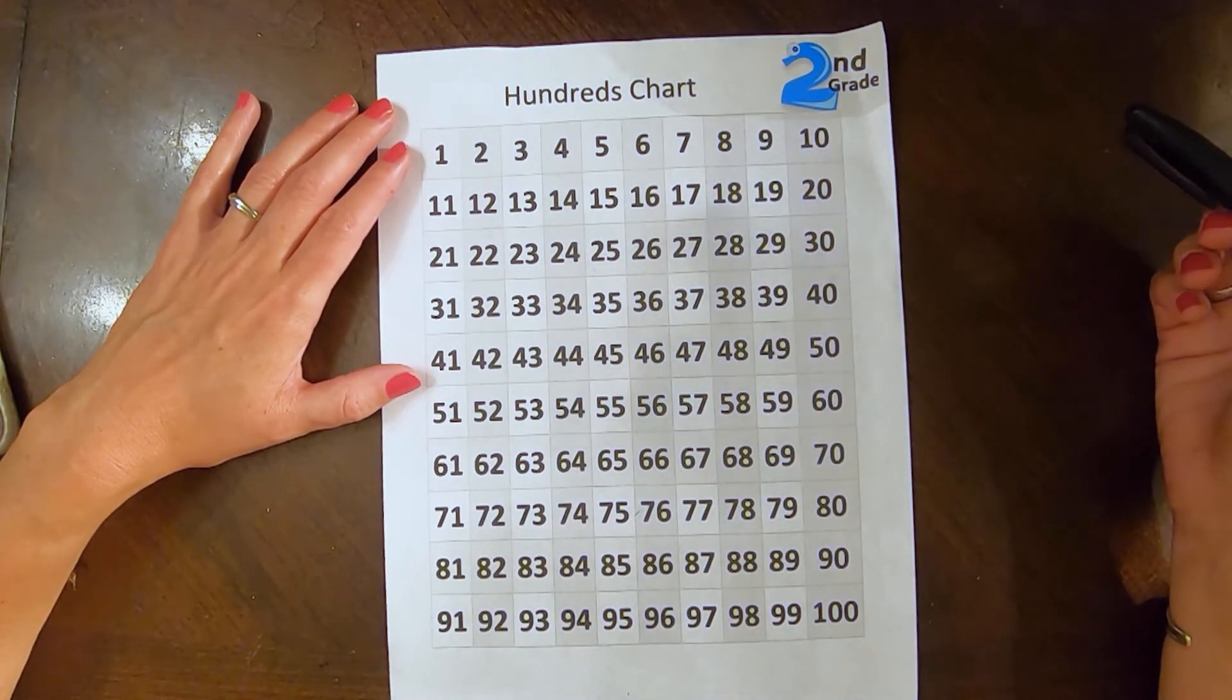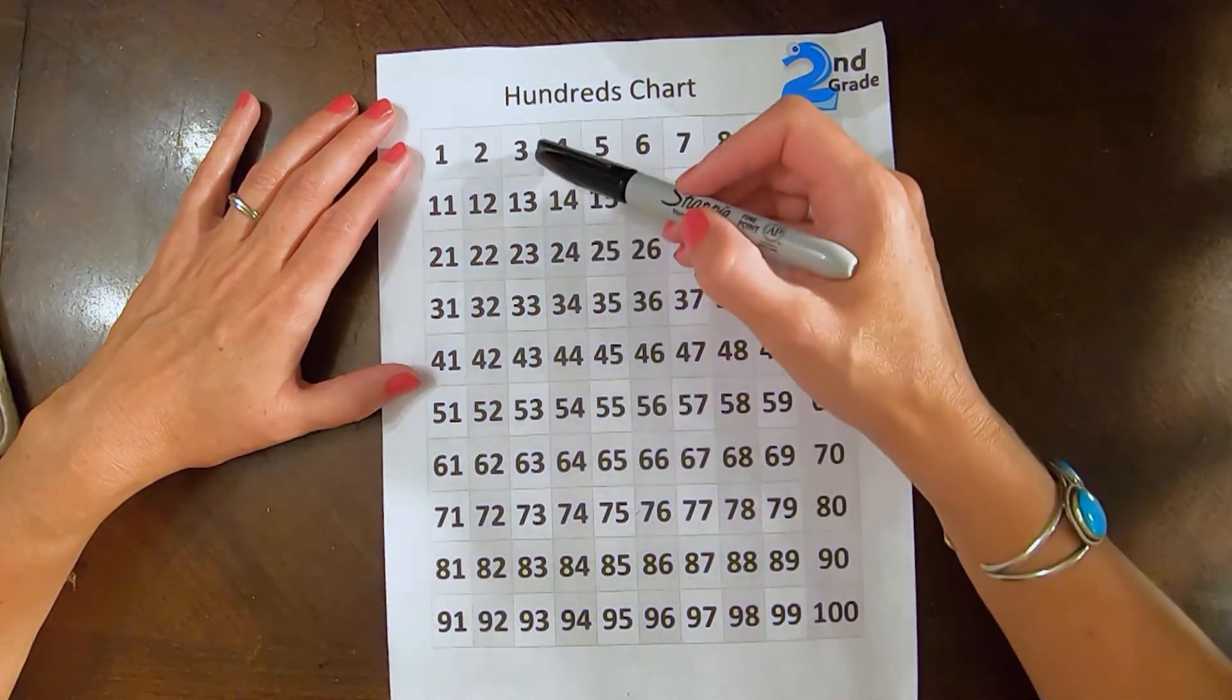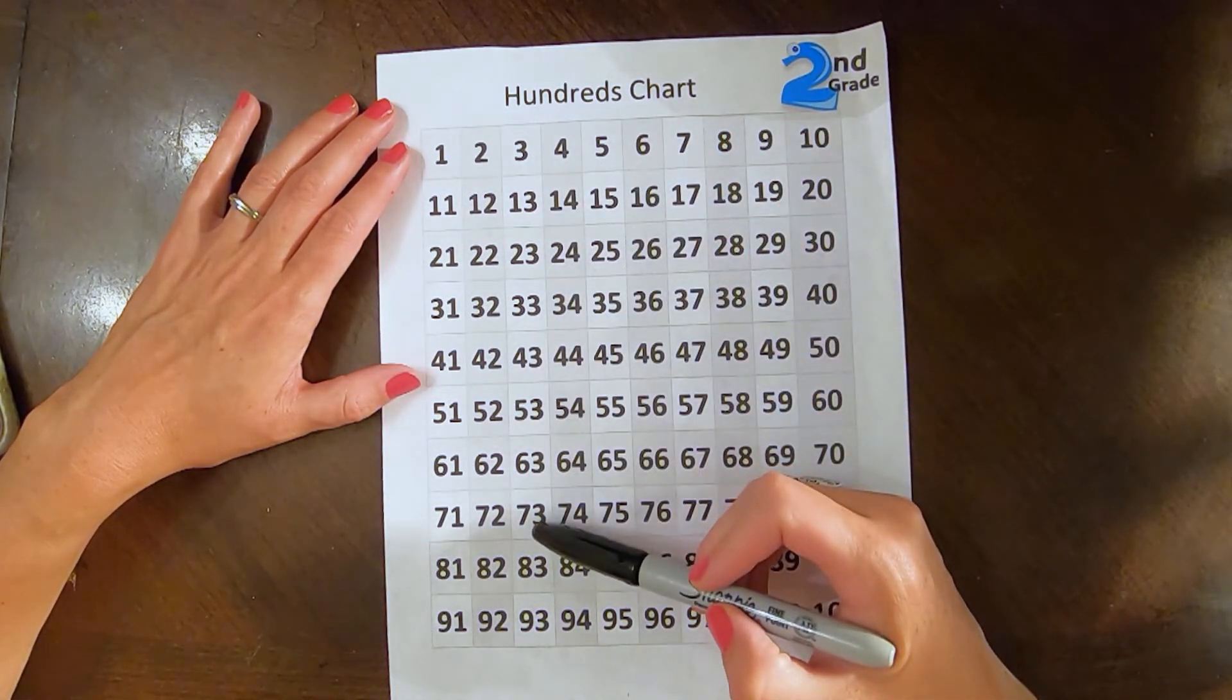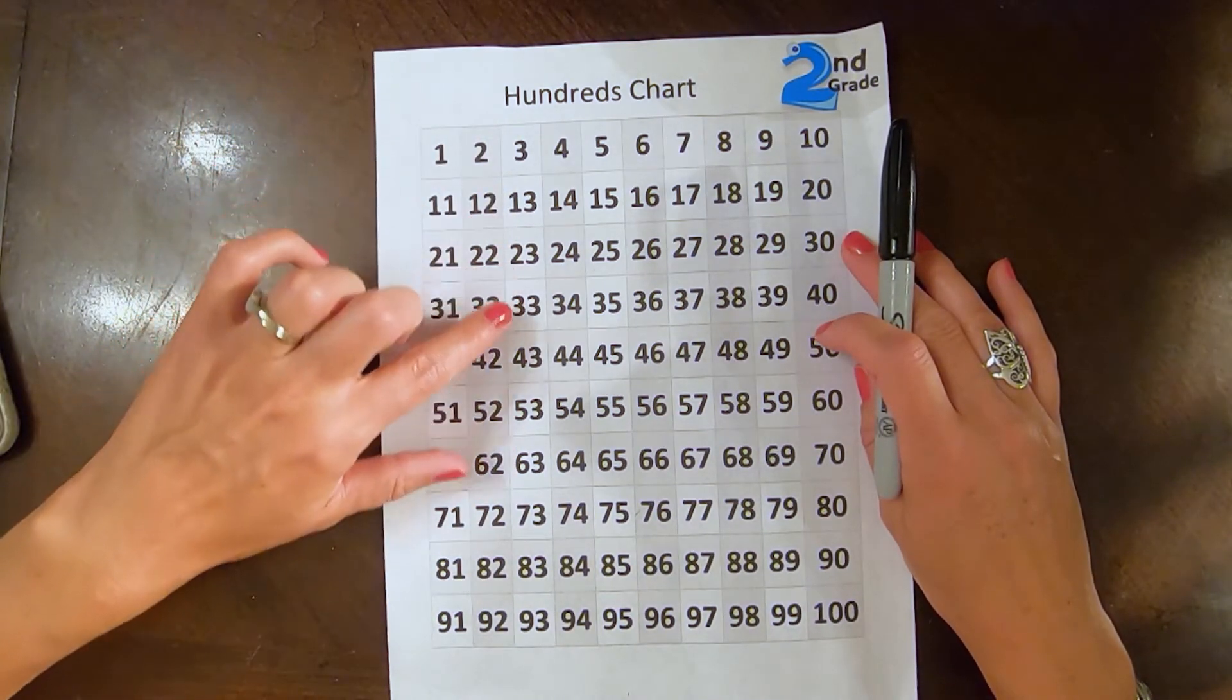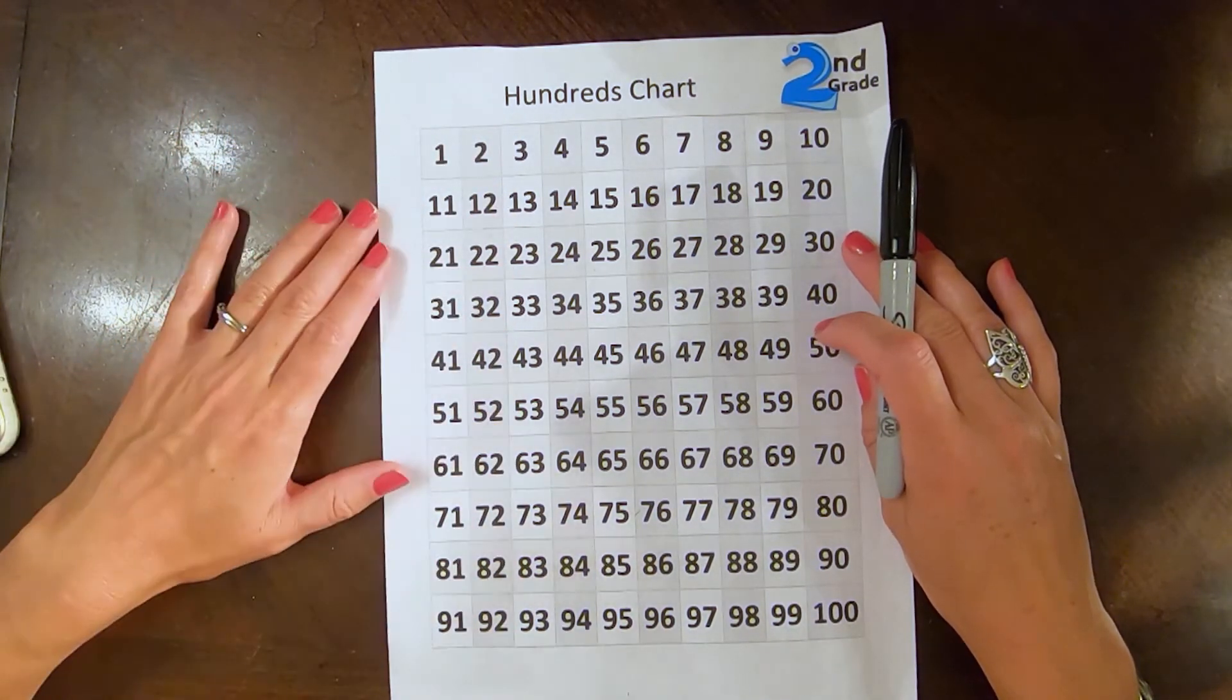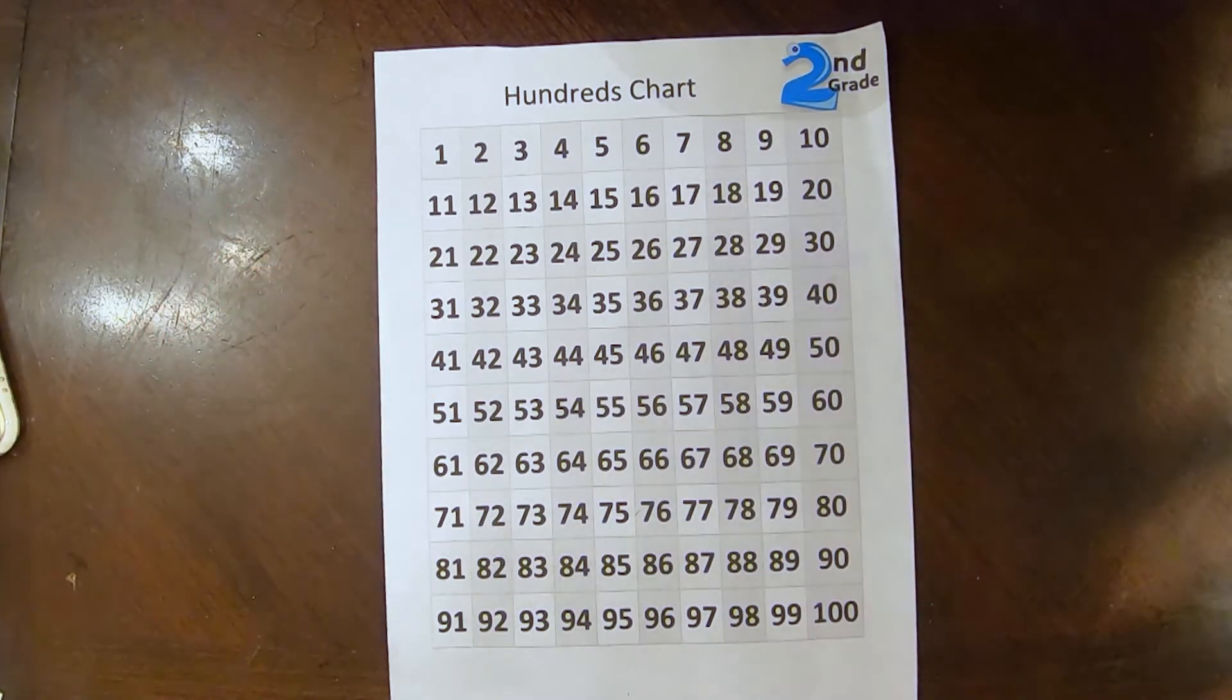I also notice that in these columns, the one spot is staying the same, but the 10 spot is going up by 1 each time I add 10. Let's go ahead and take a look at that on a number line.